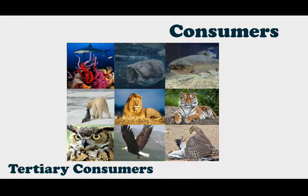The top consumers are the top carnivores which prey upon other carnivores, omnivores and herbivores. The shark, the whale shark, the polar bear, lion, tiger, owl, vultures, the hawk and the bald eagle are all organisms that can be included in this tertiary consumer category.